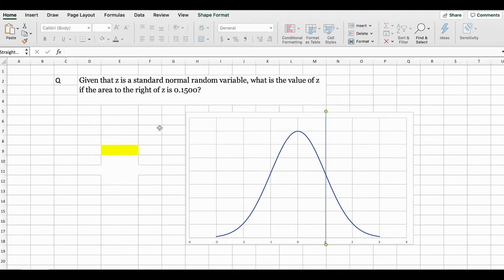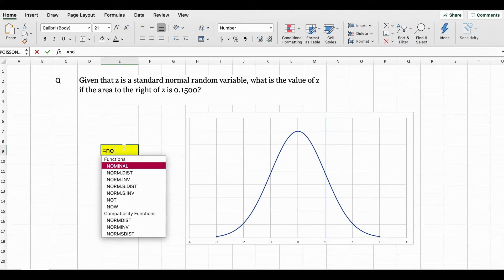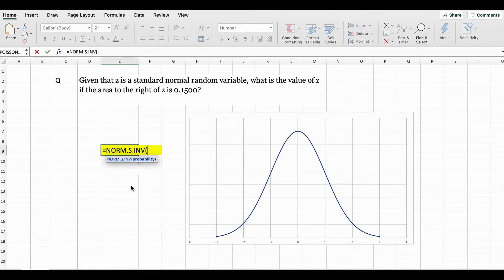In Excel, in order to solve these type of questions, you can use the NORM.S.INVERSE function. So when you open up the bracket, I'm going to type 0.1500. So the value given here is 1.04.